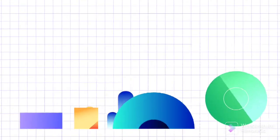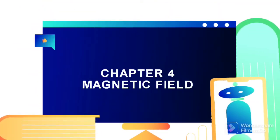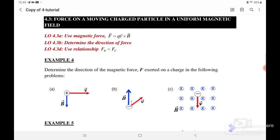Welcome back to my channel. Today we will continue with chapter 4, magnetic field. In this video, we will discuss section 4.3: force on the moving charged particle in a uniform magnetic field, Example 4.